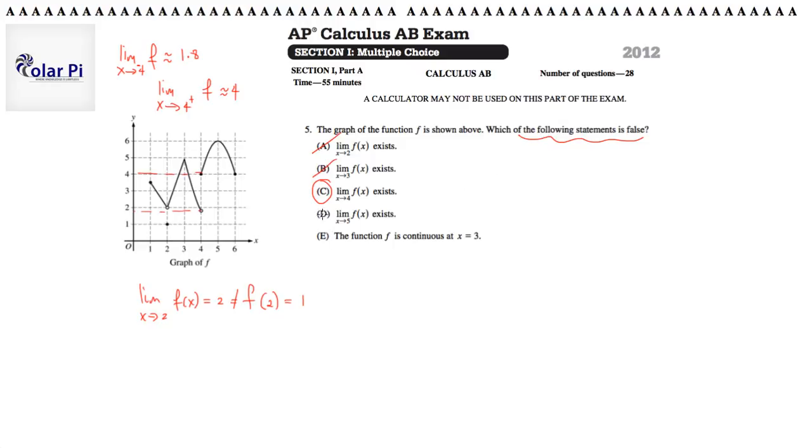And then let's just check D and E. D says the limit as x goes to 5 of f(x) exists. Yeah. The function is not only continuous, but smooth at x equals 5. So according to the visual, it looks differentiable, not just continuous, and therefore with a limit.